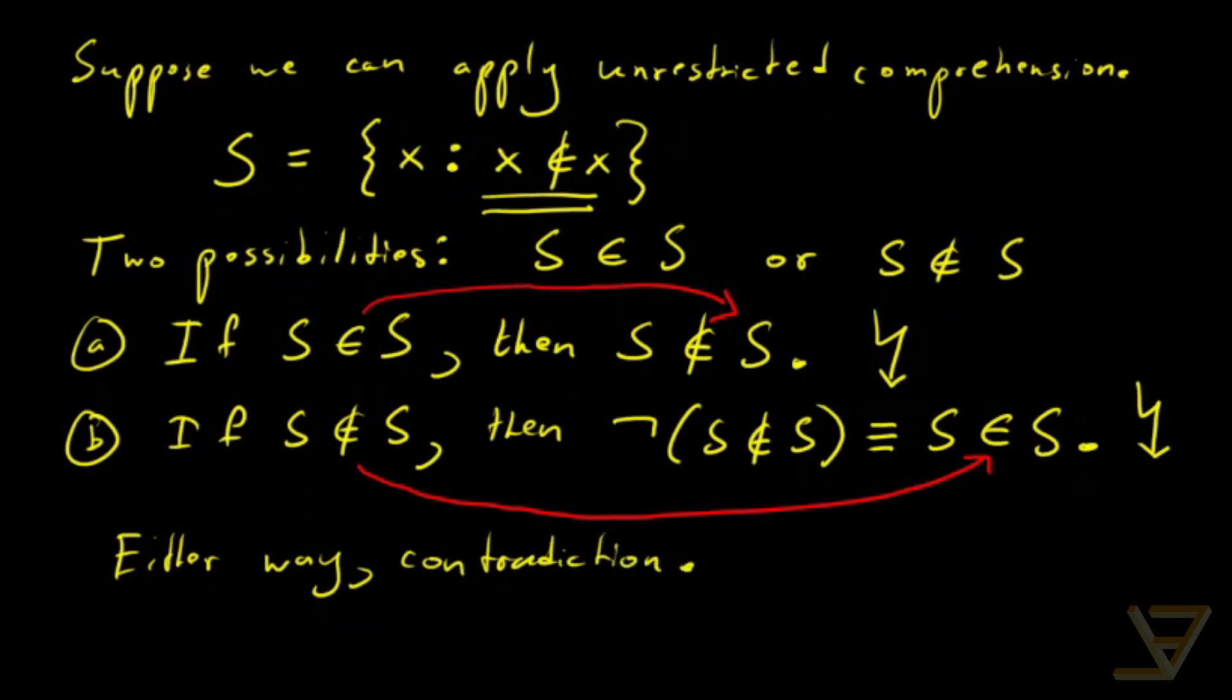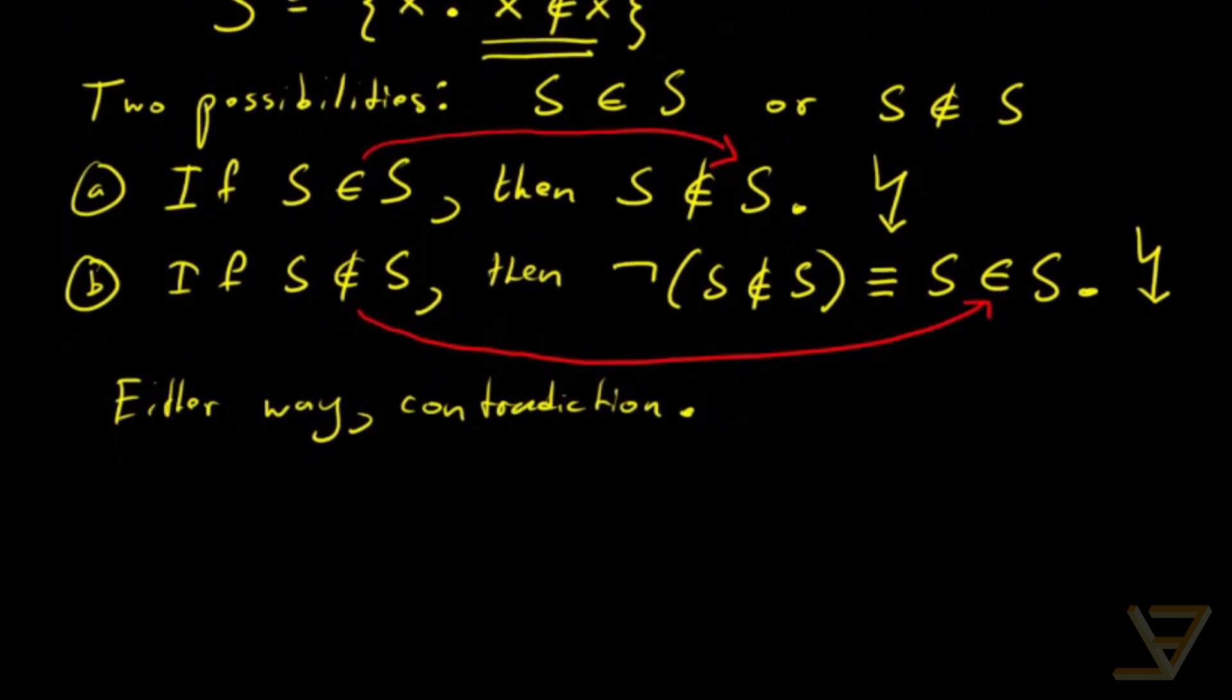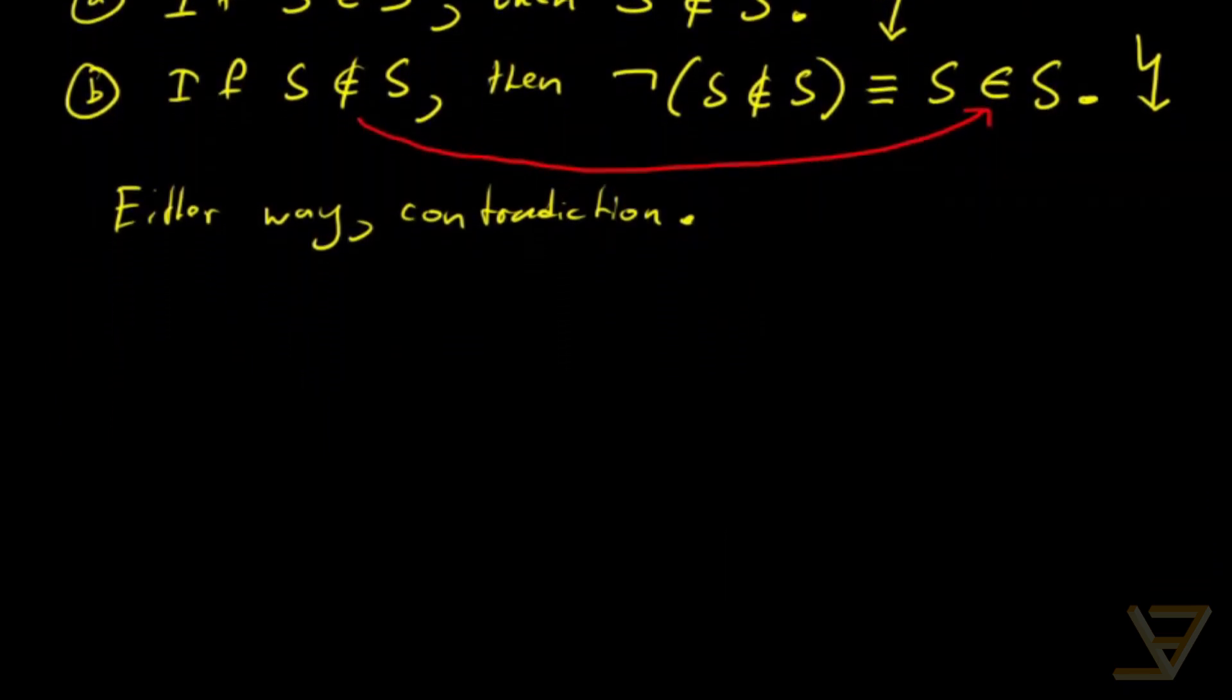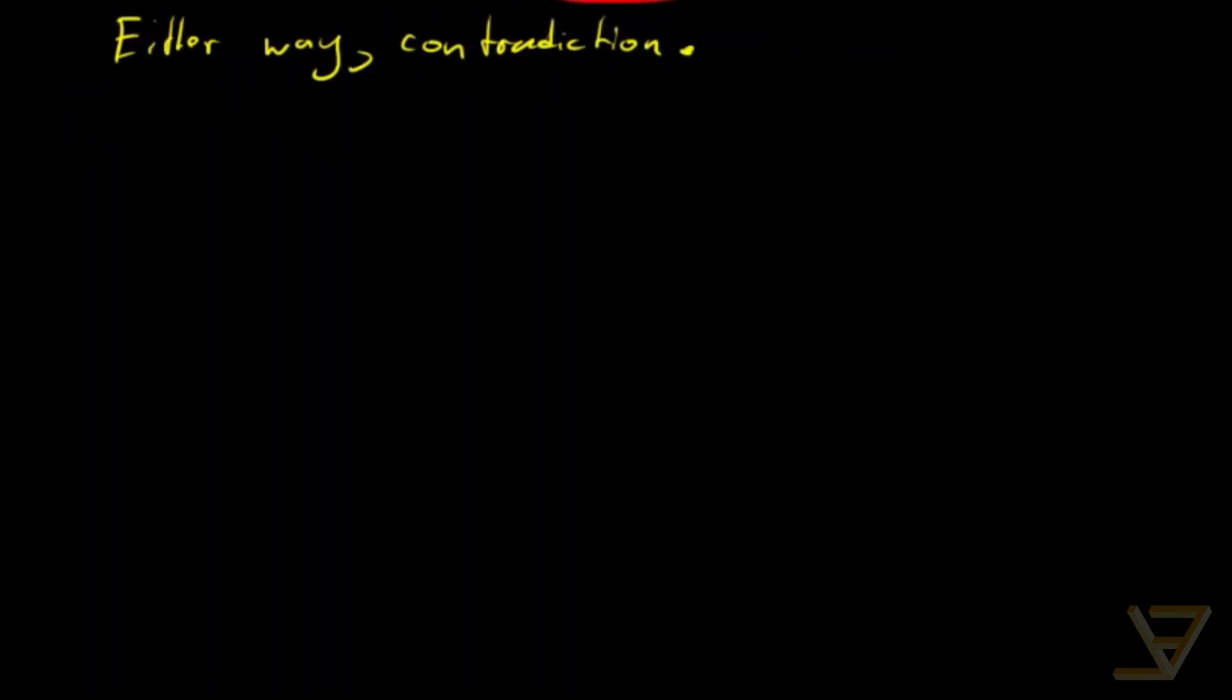This is a problem and the way we deal with it in ordinary mathematics is that we just say that unrestricted comprehension is not allowed. What do we do? How do we cope?